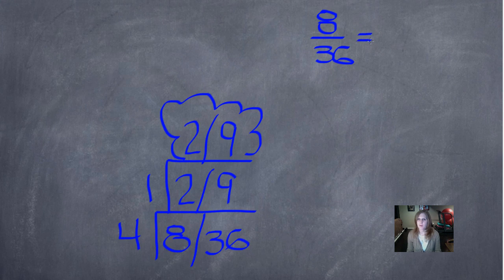And we're going to remember, we have to write it appropriately, or mathematically correct. So, we're going to write our original fraction, 8/36, and then our simplified fraction, 2/9.